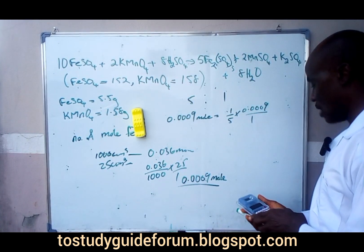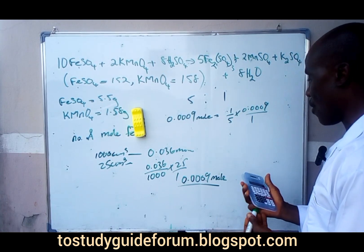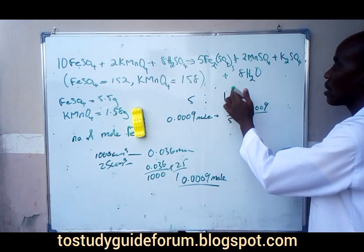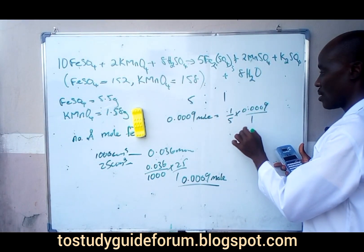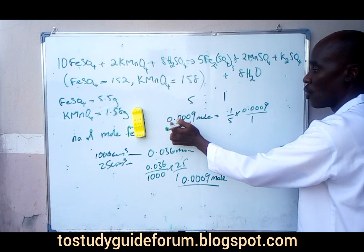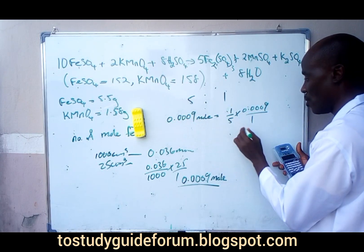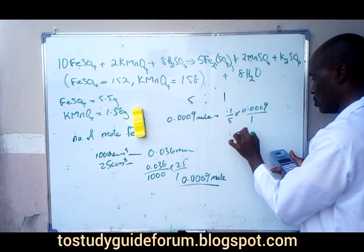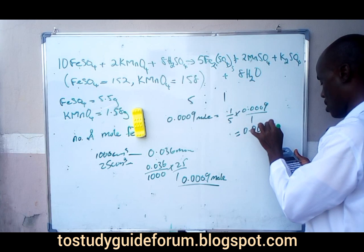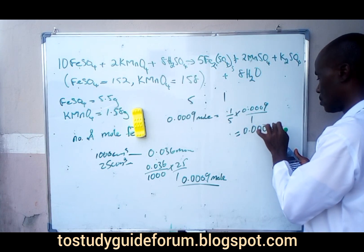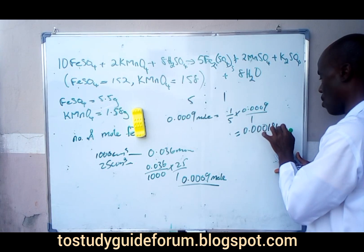When we divide, the number of moles of potassium permanganate that reacts with 0.0009 moles will be equal to approximately 0.00018 moles.